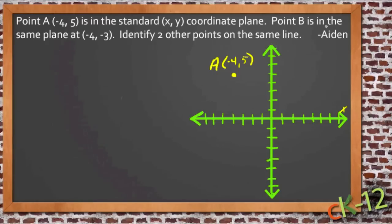And point B is in the same plane at negative 4, negative 3. So he's got a point B right here, which is negative 4, negative 3.